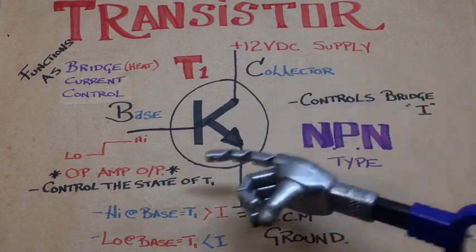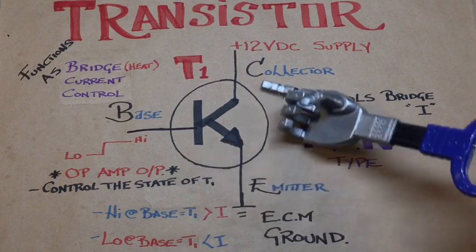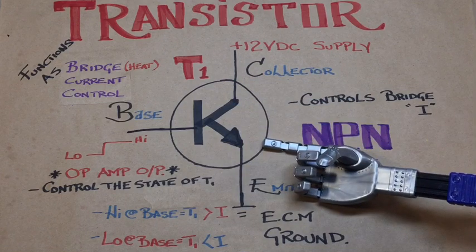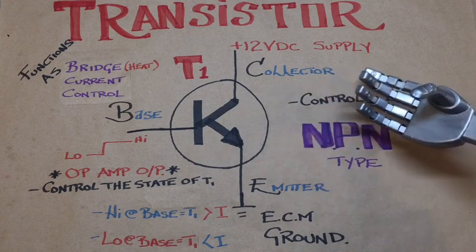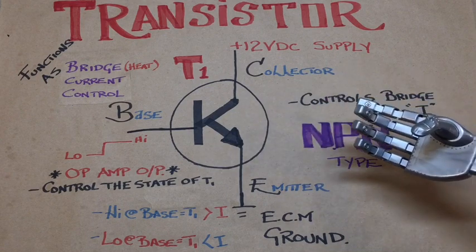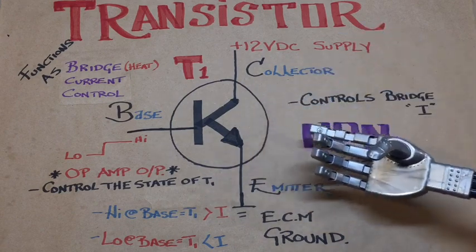Or if we start to overshoot the target temperature, the comparator here will drop the signal low, we'll have less conductivity from the transistor, lower the heating effect of the platinum wire in the bridge circuit. So that's how we maintain our target temperature.